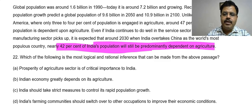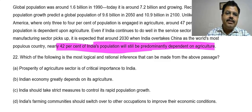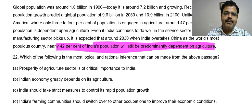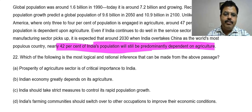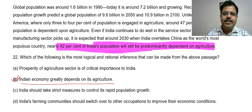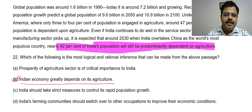Option D: India's farming community should switch over to other occupations to improve their economic condition — this may be the view of other people, but it is not supported by the passage. The passage says India's economy greatly depends on agriculture. Option D cannot be the answer. Some people may choose D, but the better and correct answer is B.